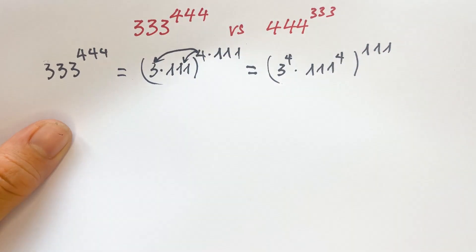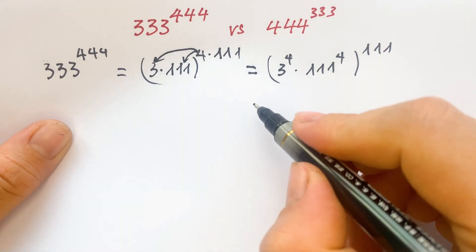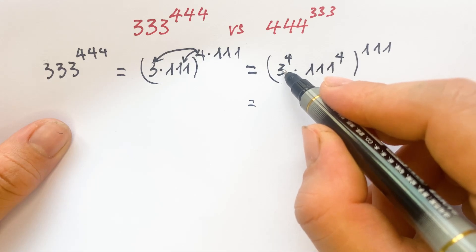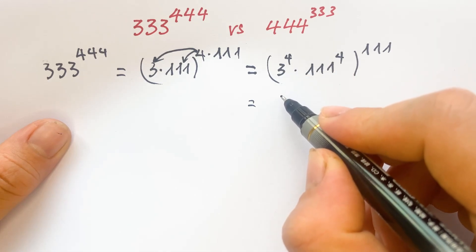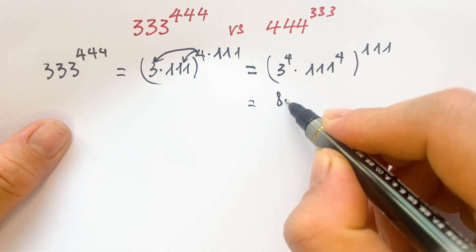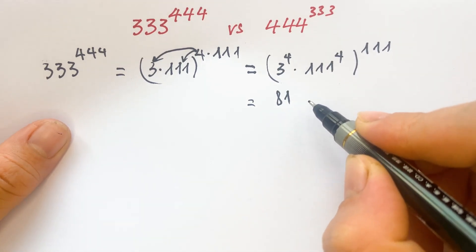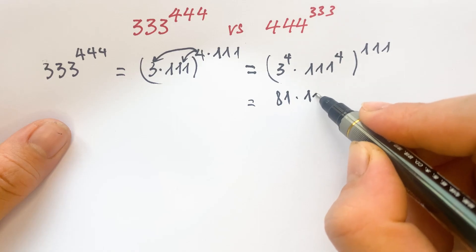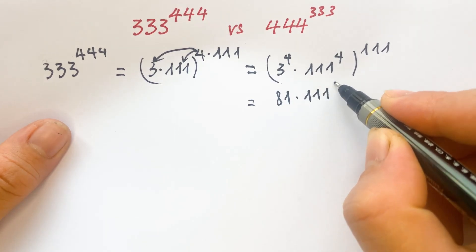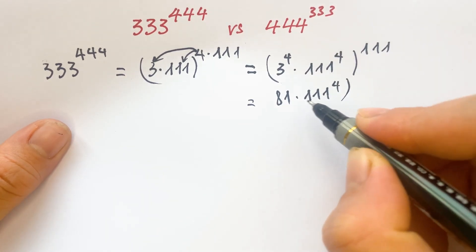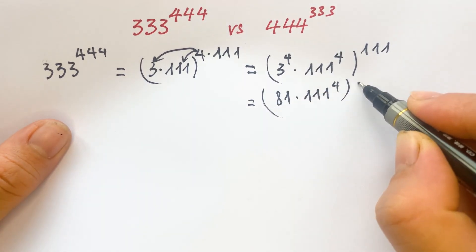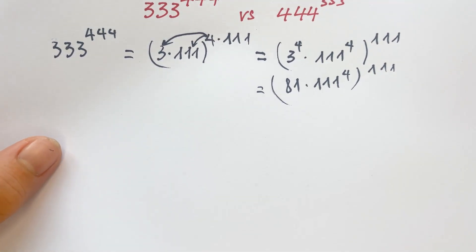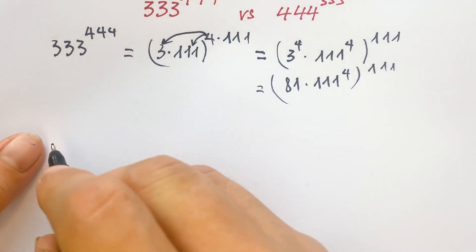So the next step gives us 3 to the power 4 equals 81, so this becomes 81 times 111 to the power 4, whole to the power 111.